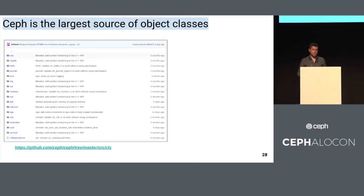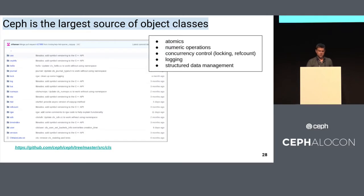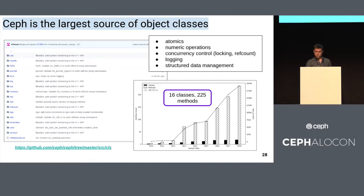Another great resource if you're interested in developing object classes is Ceph itself. This is a directory listing of the Ceph source tree — my favorite directory in Ceph — it contains all the object classes. You can go shopping in this directory: there's a ton of examples, design patterns for atomics, numeric operations, different flavors of concurrency control. There are over 200 methods here you can peruse to help in your development process.